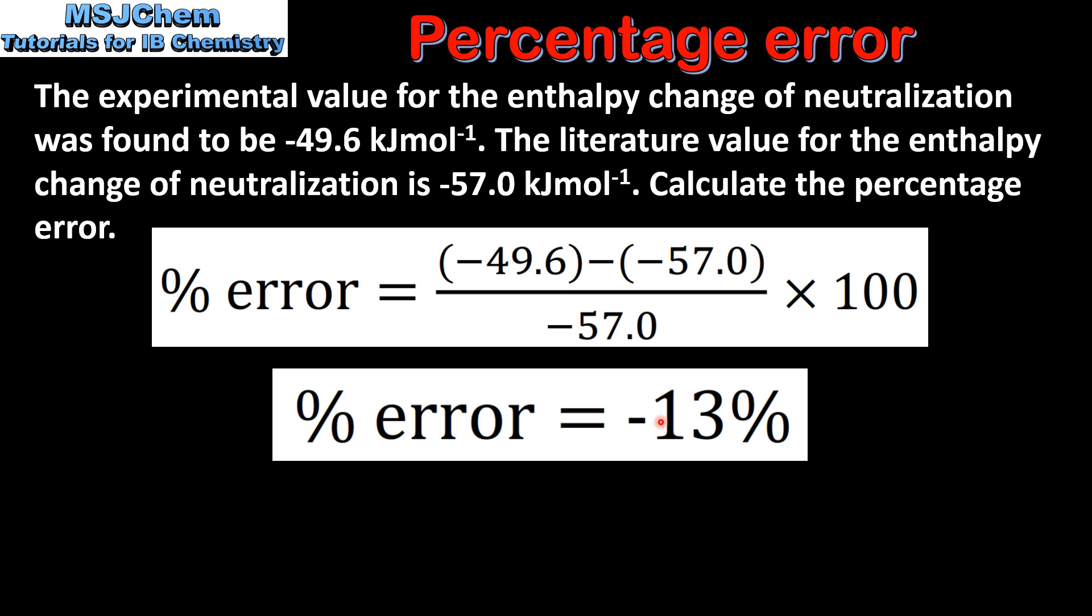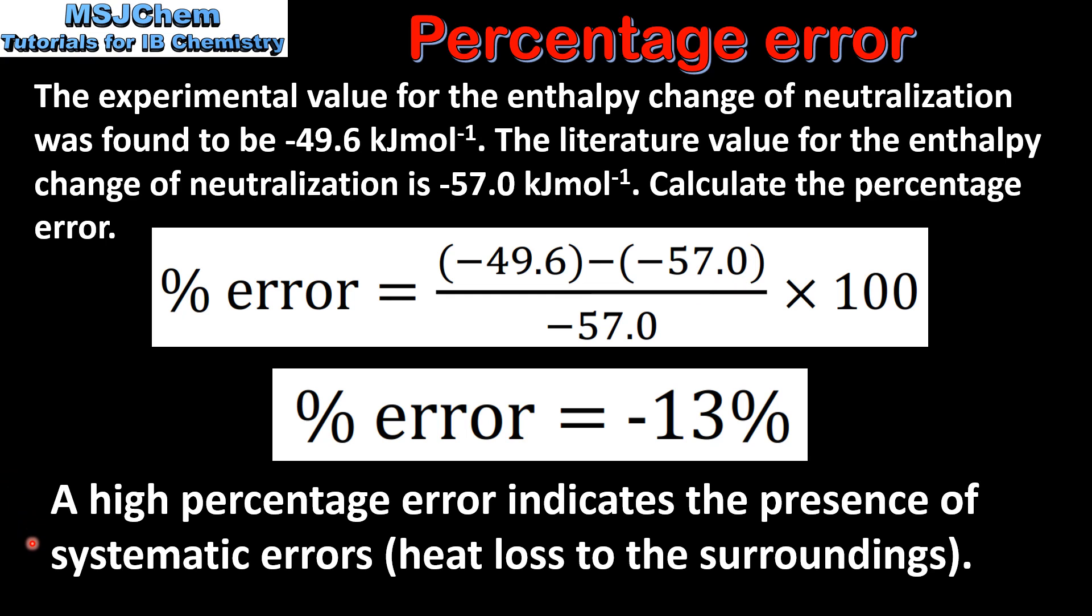The negative percentage error is due to the fact that the experimental value is less than the theoretical value. A high percentage error indicates the presence of systematic errors, for example in an enthalpy change experiment, heat loss to the surroundings.